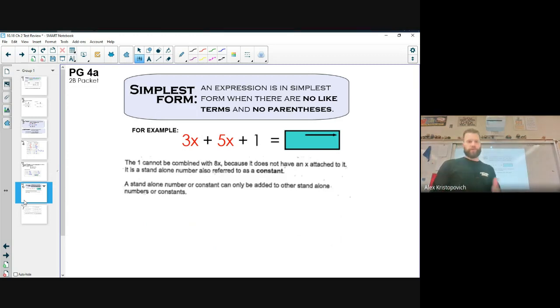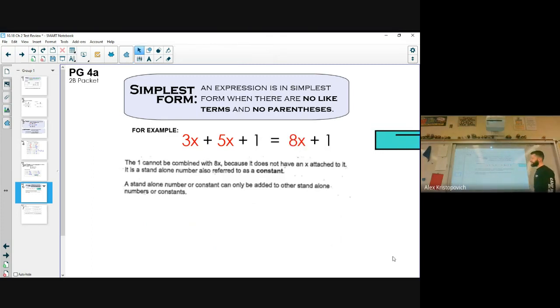All right. On page 4a, so you'll flip over. So it talks about simplest form. You might have heard me just use that phrase right there about it can't be simplified any further. So something is fully simplified or in simplest form when there are no like terms remaining and no parentheses. So for example, we have something that looks like this. 3x plus 5x plus 1. Well, this is not fully simplified because there are some like terms remaining that can be combined. So the 3x plus 5x can go ahead and be combined into 8x and the plus 1 stays. And we are done here. Okay. We cannot combine this any further because 8x is an x term and the 1 is a lone number. Okay. Also known as a constant. Okay. That definition is right here. A constant. So a standalone number or a constant can only be added with other standalone numbers or constants. Okay. So 8x and 1 are not like terms. We are done with that.